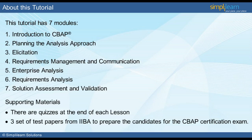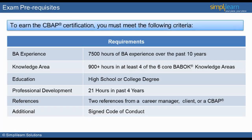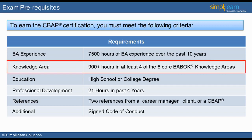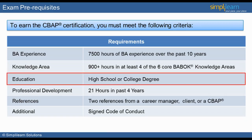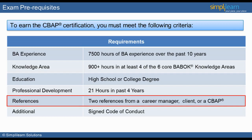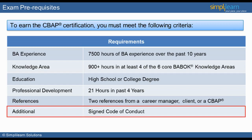In order to get the CBAP certification, there are certain requirements to be met. The business analyst should have at least 7,500 hours of relevant experience in the BA field spanning over the last 10 years. The individual should also have more than 900 hours in at least four of the six core BABOK knowledge areas. A high school or college degree is the minimum educational qualification required. The individual should have 21 hours of professional development in the last four years. Additionally, they would require two references from a career manager, client, or a CBAP. Finally, the individual would require a signed code of conduct.